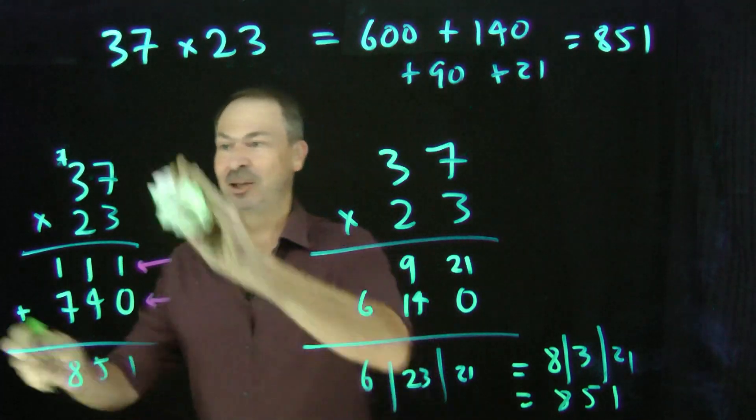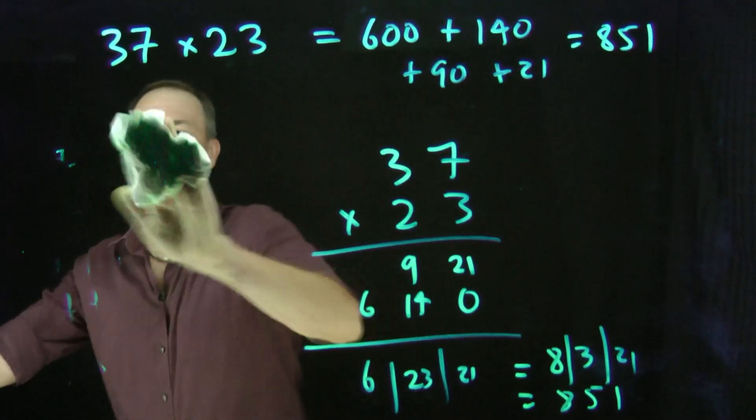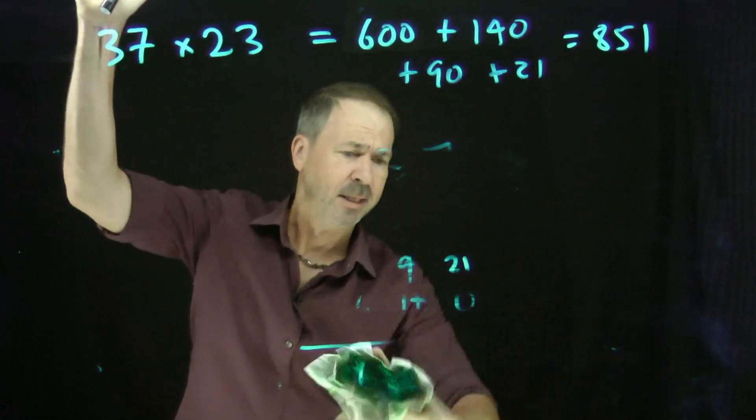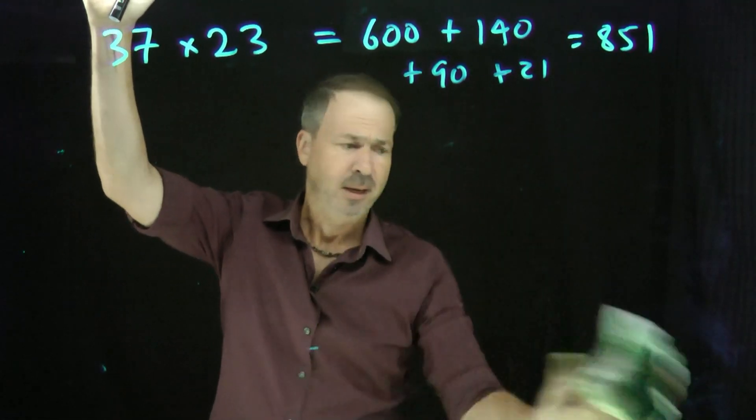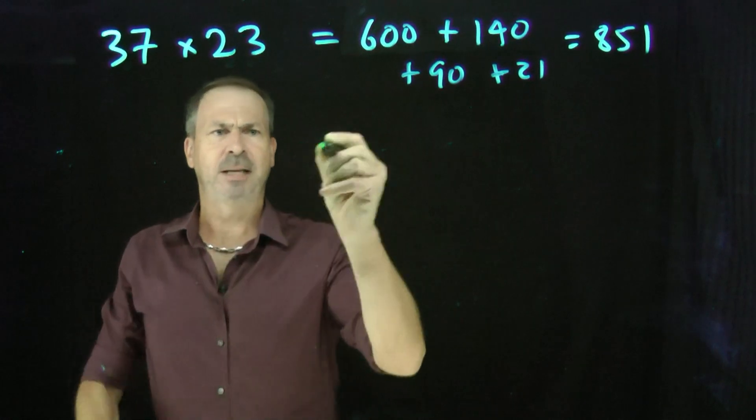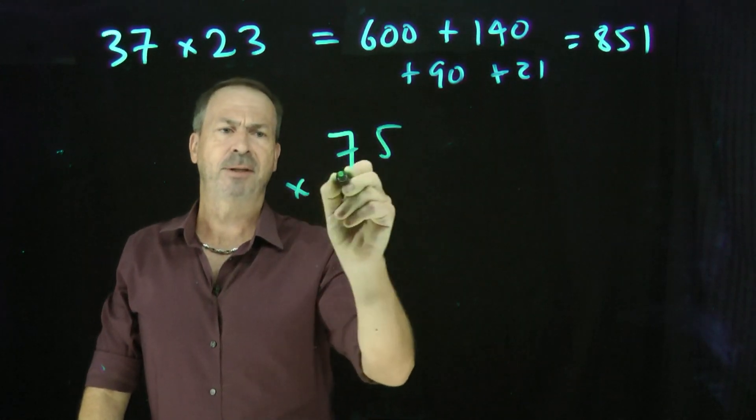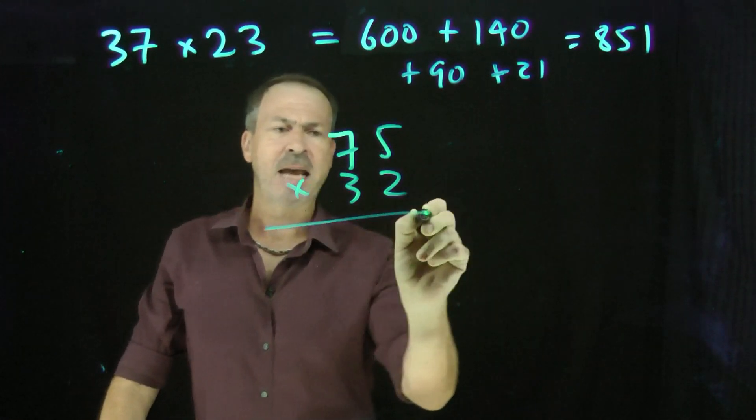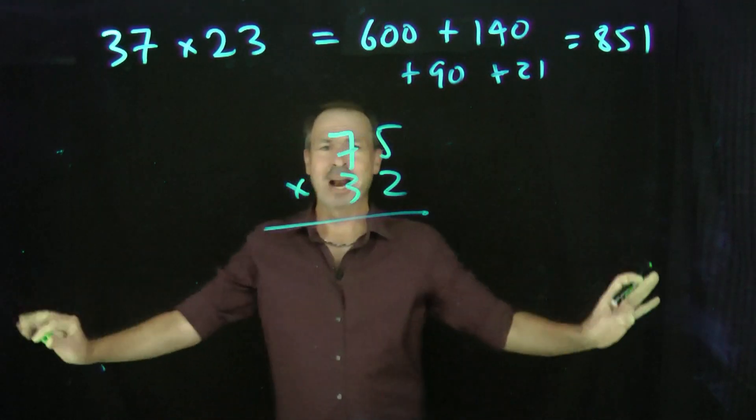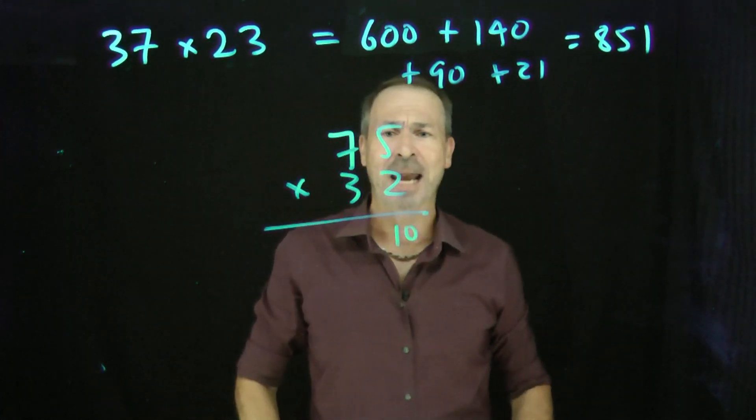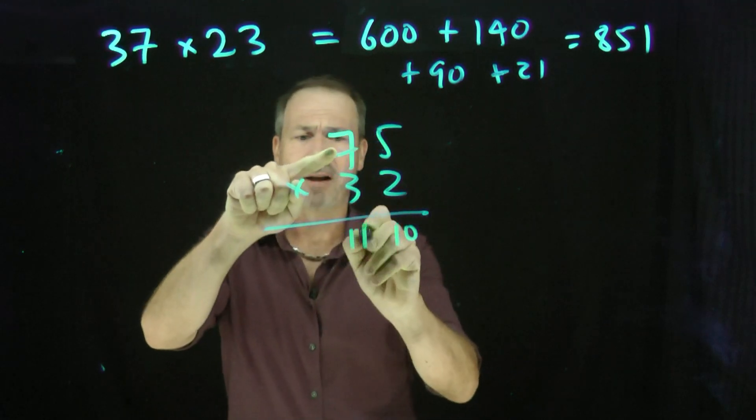Let's do, I don't know, 75 times 32. Let's try that. Okay. So I'll do this mash-up version on 75, I said, times 32. 75 times 32. So just do the standard long multiplication algorithm and don't carry anything. 2 times 5 is 10. Just write 10. 2 times 7 is 14. Just write 14.